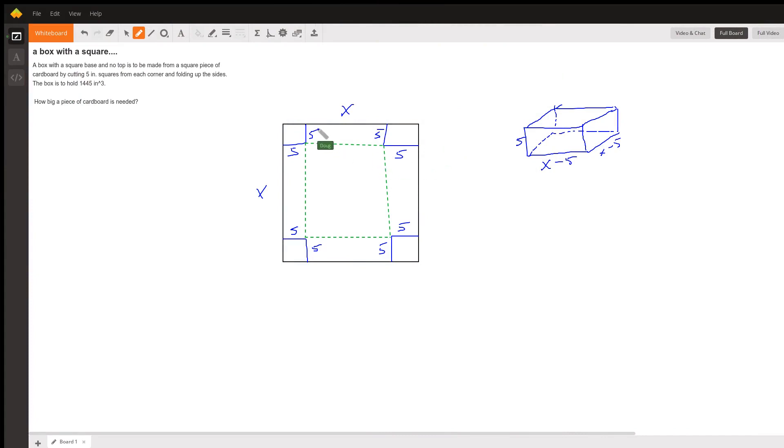What's happening with this problem? Here's the piece of cardboard. It's a square piece of cardboard, so the dimensions, let's say, are X by X.